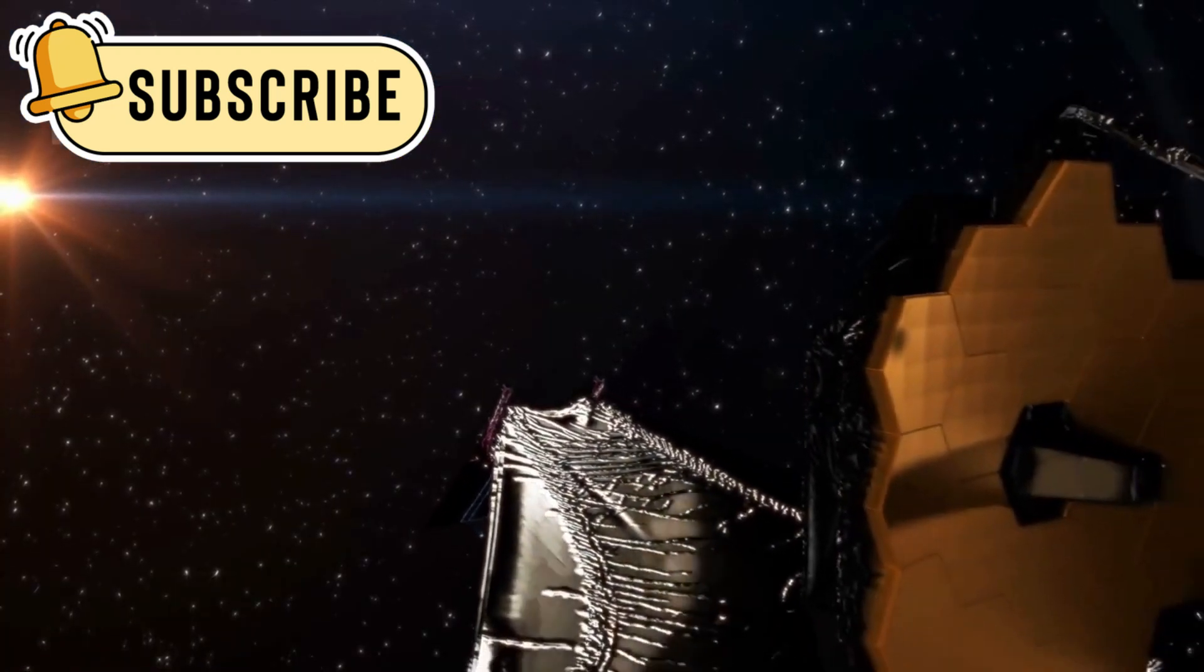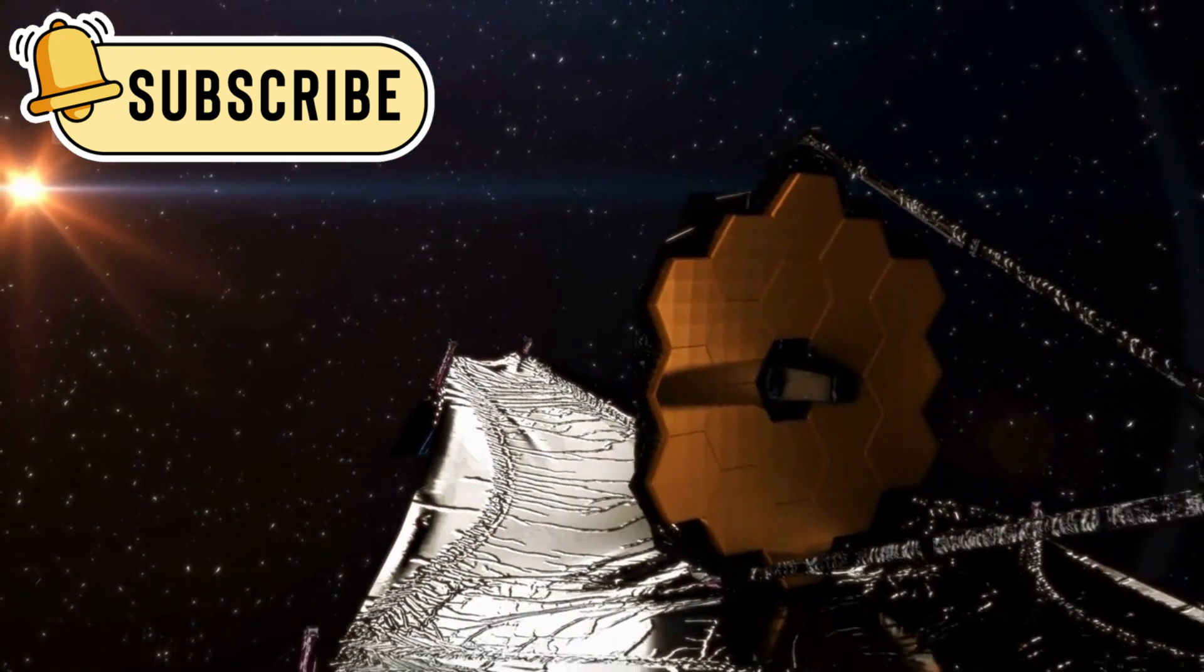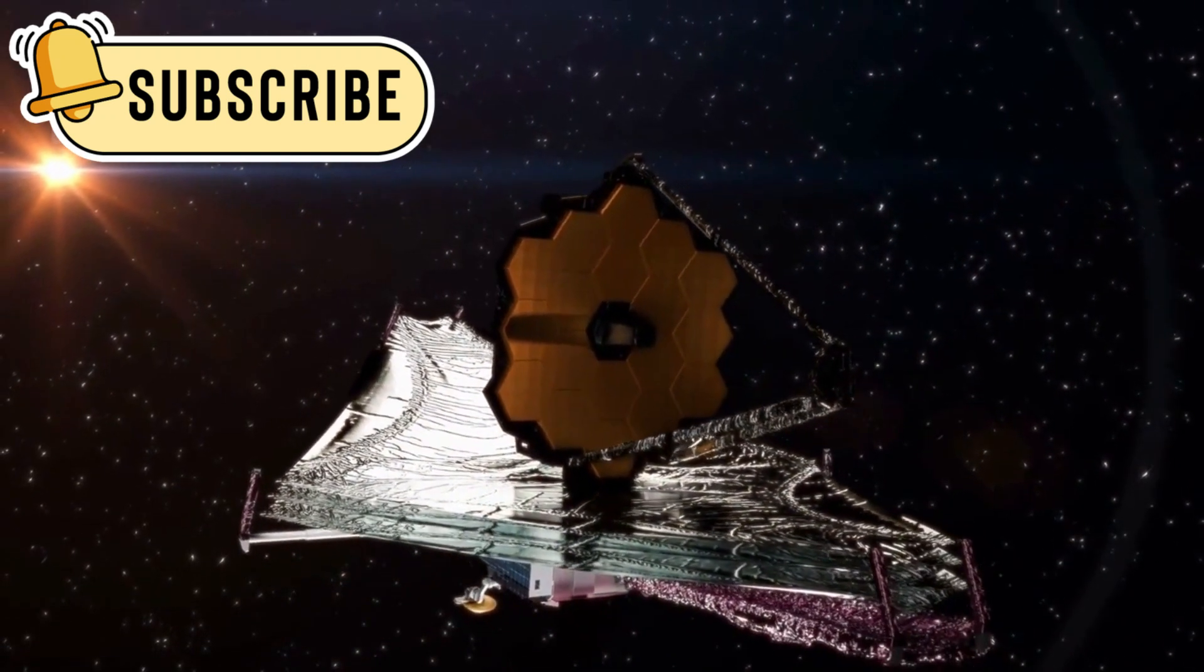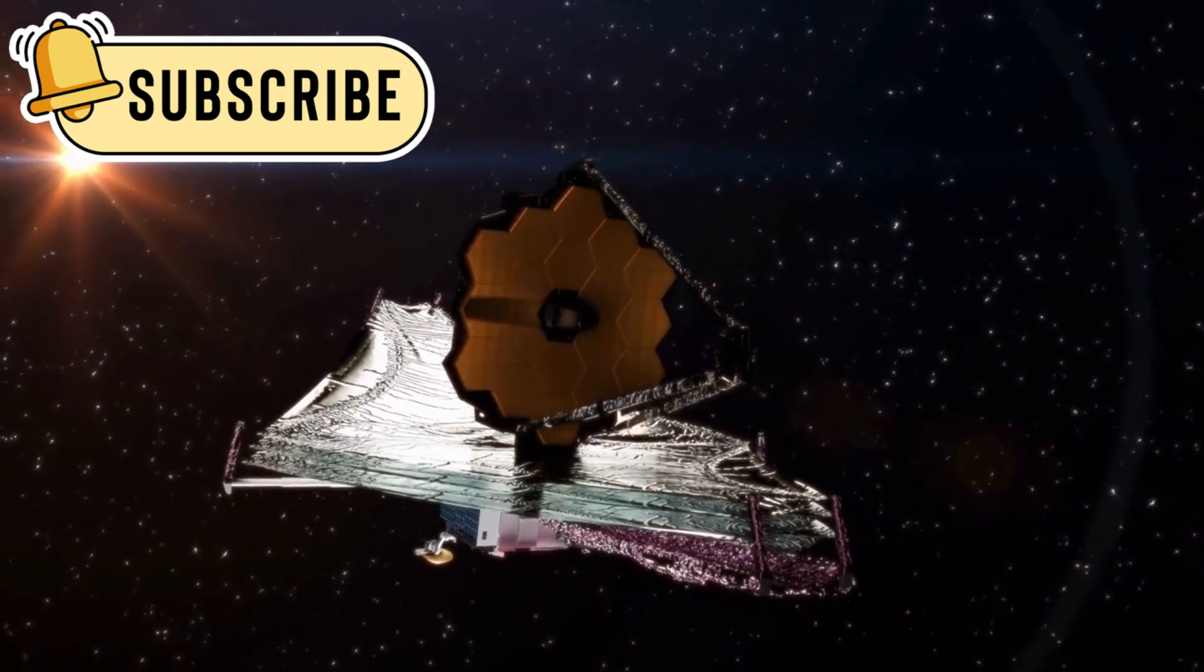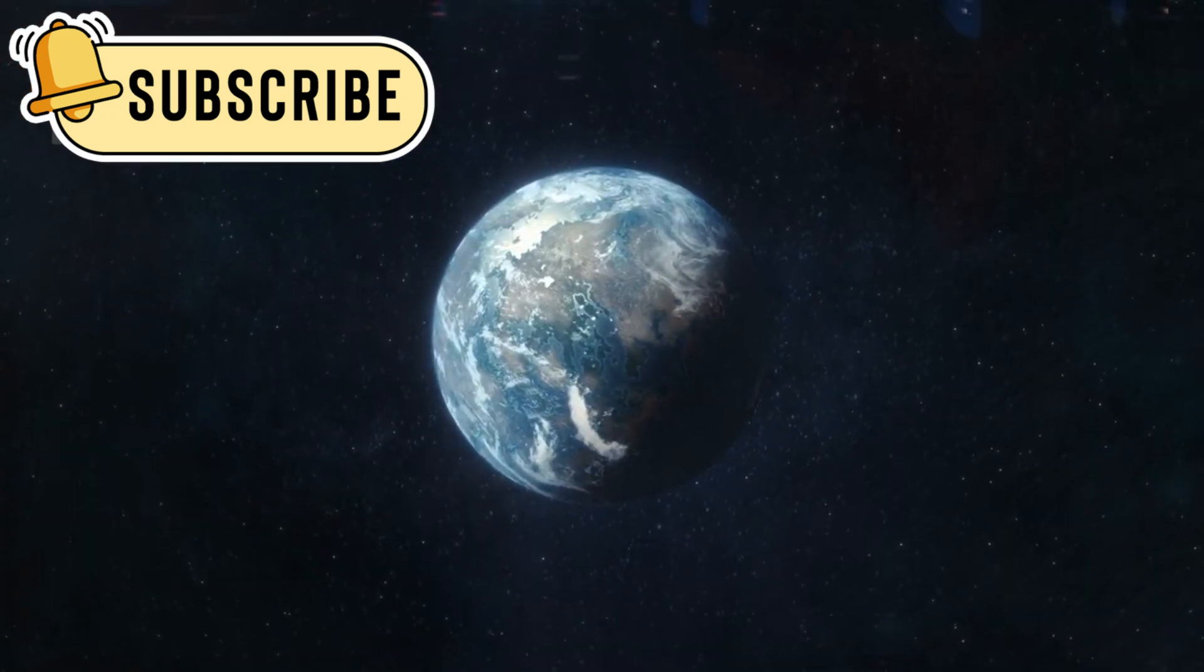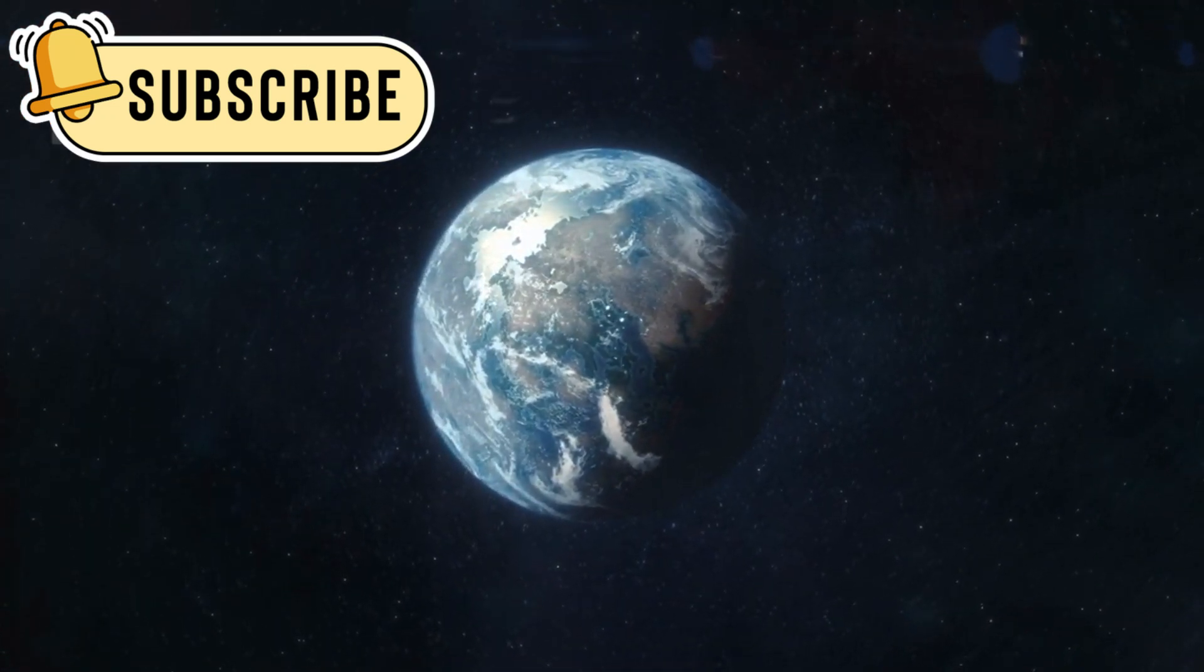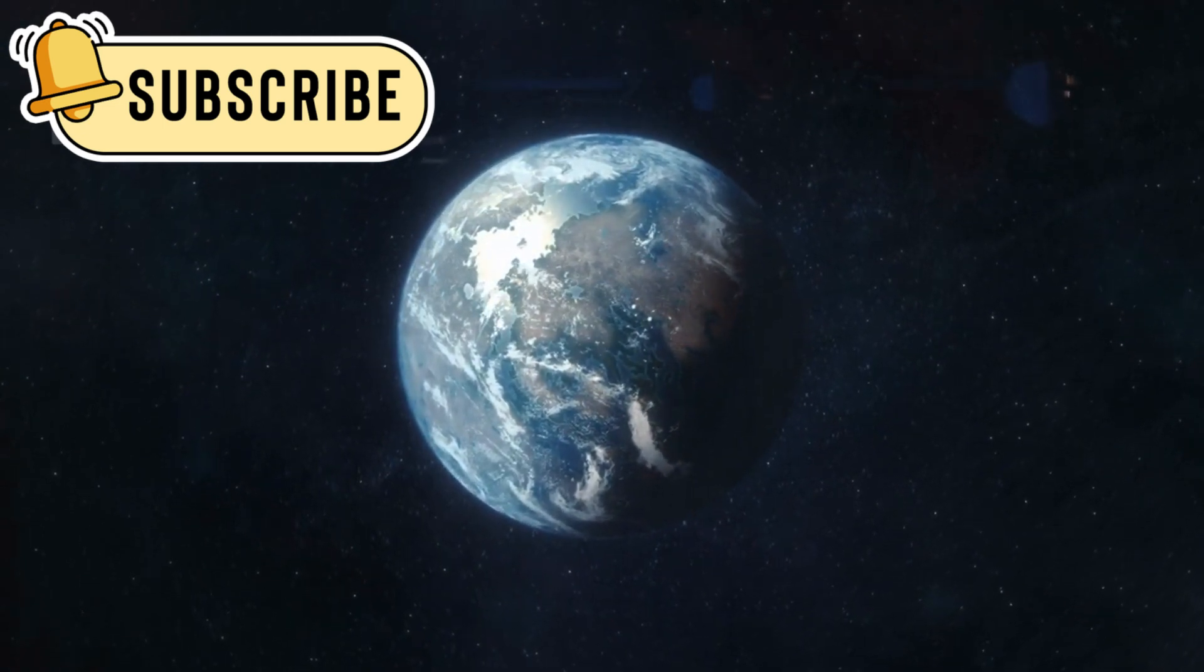Launched into orbit with powerful instruments, JWST acts like a giant magnifying glass, helping scientists study the most distant and hidden corners of space. One of its most exciting missions is focused on a faraway world called K218b, an exoplanet that has become a hot topic in the search for alien life.